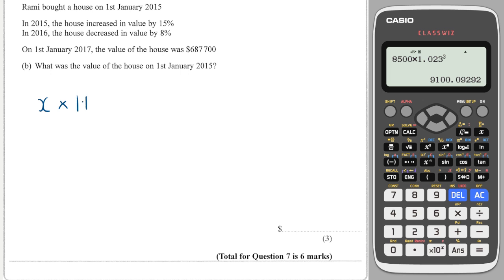That multiplier is 1.15, and then we decreased it by 8%, so that multiplier is 100 minus 8, which is 92, so it's 0.92. That equals the amount of money it's now worth.